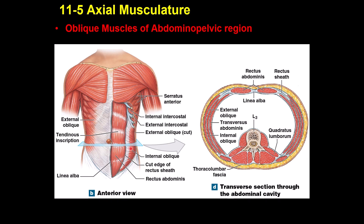The functions of these muscles differ slightly. The external oblique, rectus abdominis, and internal oblique all cause depression of the ribs, flexion of the spine, and compression of the abdomen. There is also another muscle called the transversus abdominis, which only causes compression — it does not cause depression of the ribs or flexion of the spine.